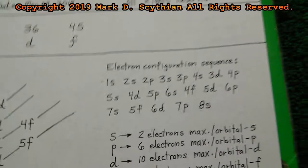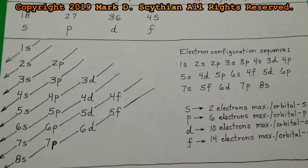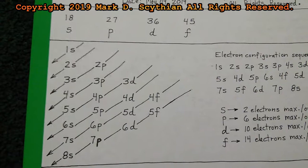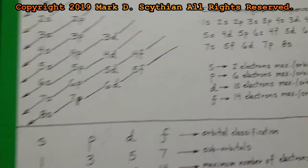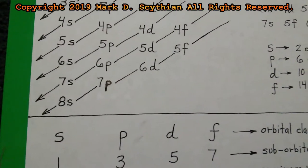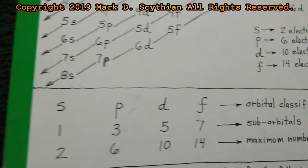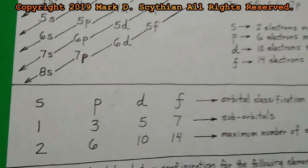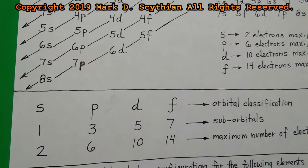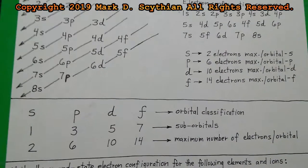You easily get the sequence for the orbitals without having to memorize it — unless that's easy for you. It's simpler to just set up this orbital sequence configuration chart. The orbital sequence is SPDF. The number of suborbitals per orbital classification starts from 1 and goes up in odd increments: 1, 3, 5, 7. Multiply the number of suborbitals by 2 to find the maximum number of electrons per orbital.